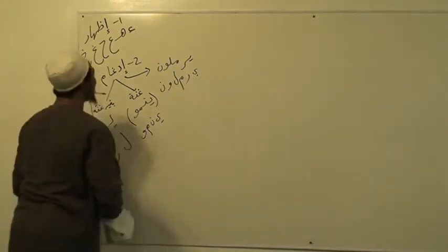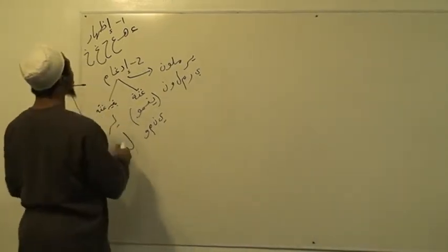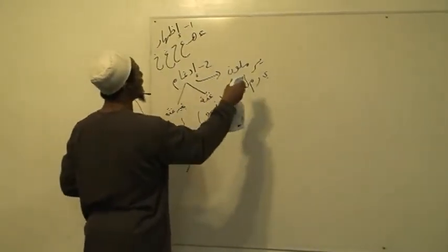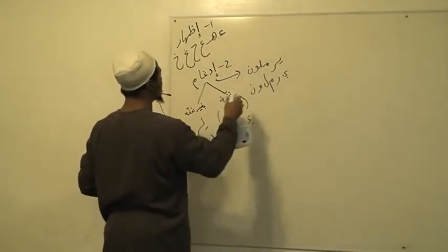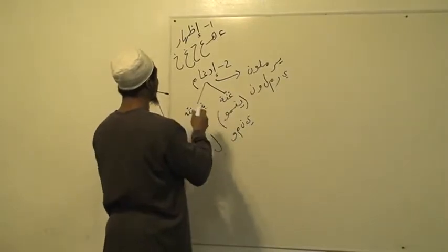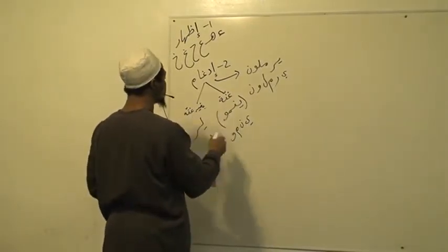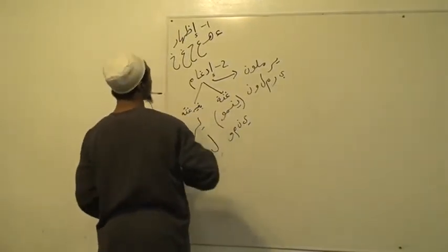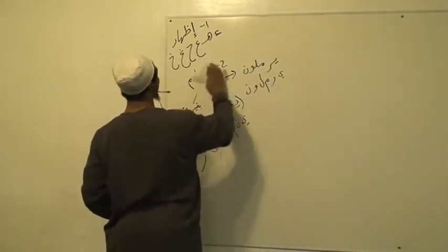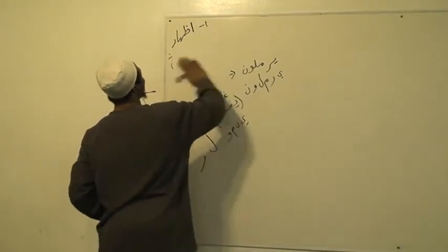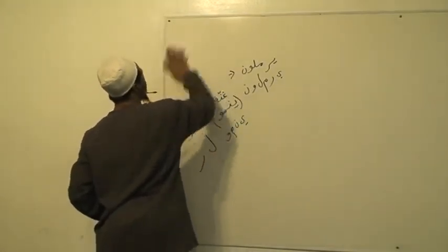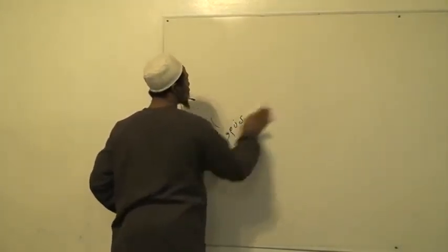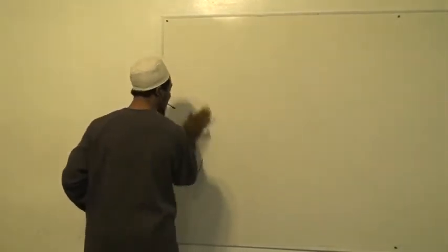The text goes: وَثَانِ إِذْ غَامٌ بِسِتَّةٍ أَتَتْ فِي يَرْمَلُونَ عِنْدَهُمْ قَدْ ثَبَتَتْ — that's the same point we just went over. I'm saying this text over and over again for people to memorize it.